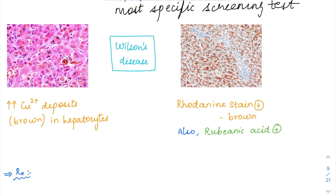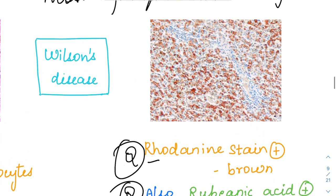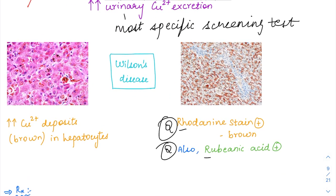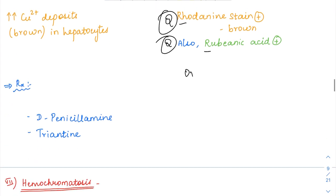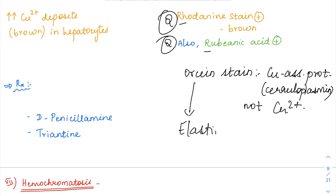How do you stain for copper? The special stains for copper are rhodanine stain and rubeanuc acid stain. Both produce brown color. Don't confuse with orcein stain. Orcein stain does not stain copper—it stains the copper-associated protein, ceruloplasmin. Orcein can also stain elastin and hepatitis B antigen (HBsAg).